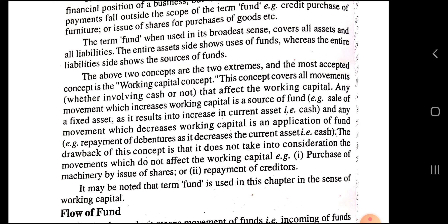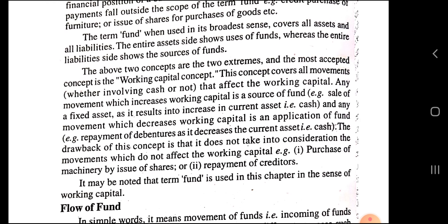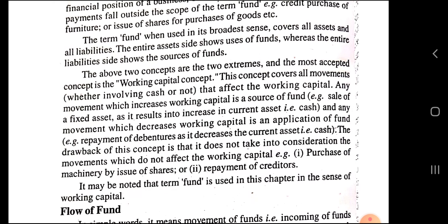In the broadest sense, the entire asset side shows the use of fund — that is, application of fund — whereas the entire liability side shows the sources of fund. The total of all assets is known as application of fund, because funds which come into the business are applied in the purchase of assets and to create current assets. Sources of fund means all the liability side — that is, share capital, creditors, bank overdraft, reserves and surplus. The amount utilized for purchase of assets or to create current assets is considered as application of fund. The above two concepts are the two extremes, and the most accepted concept is the working capital concept.